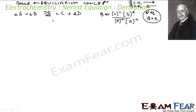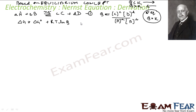We also know one more critical equation: Delta G is nothing but Delta G naught plus RT ln Q at any point of time. Let's call this equation one and this equation two.